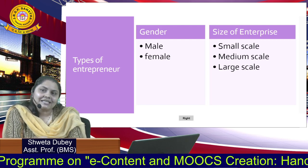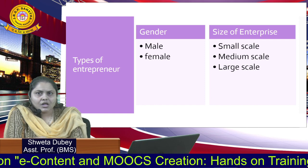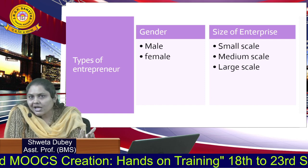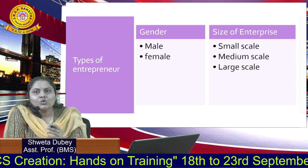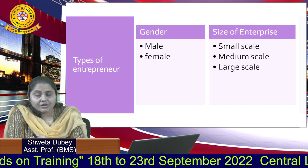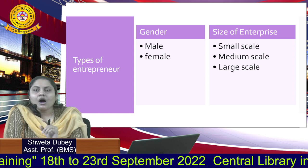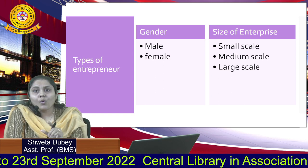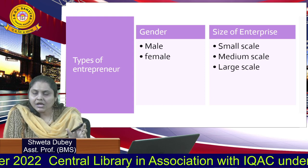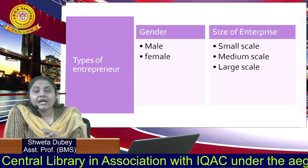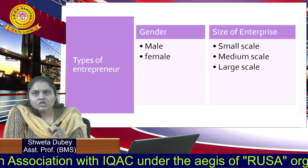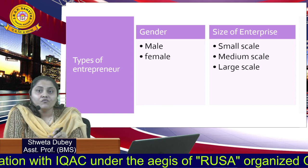Coming to the next classification, we classify on the basis of gender. A male personality who is doing a business is called a male entrepreneur, and a woman who is doing a business is called a woman entrepreneur. For a woman entrepreneur, there are certain constraints: she must have ownership of 50% investment in the business, and 50% of employees in that organization must be women — then we can say that is a women-run enterprise.